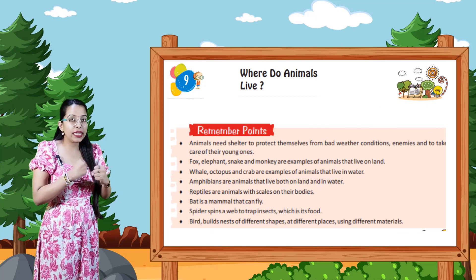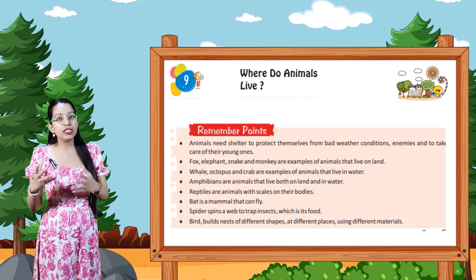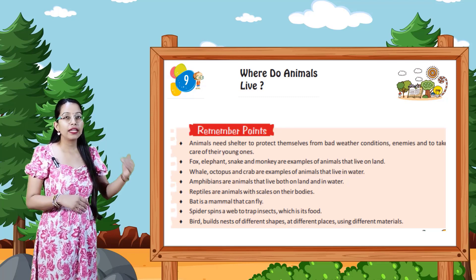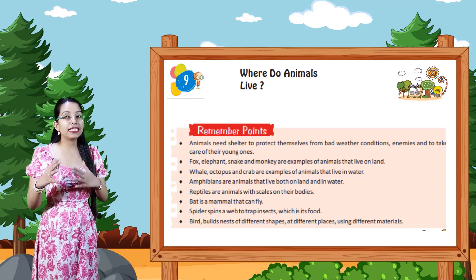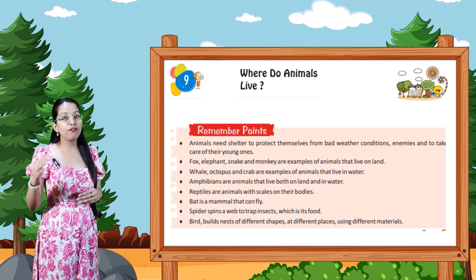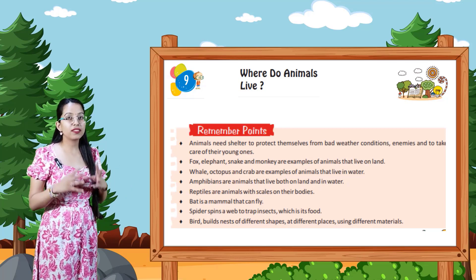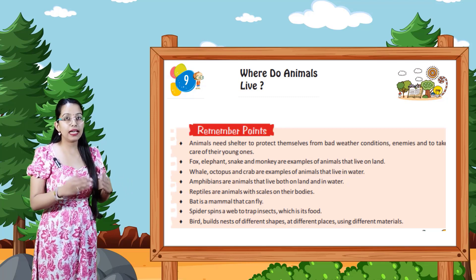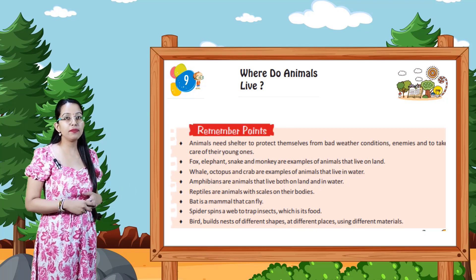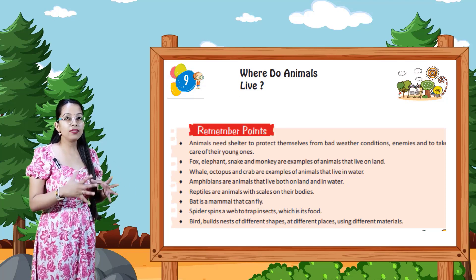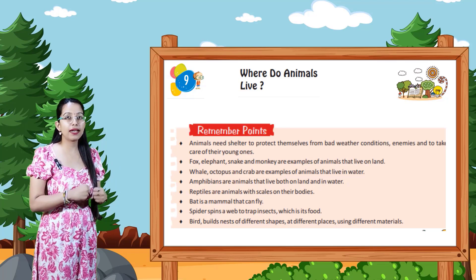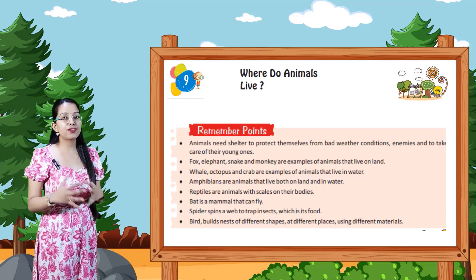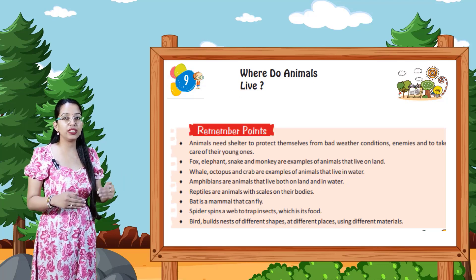Now let us conclude with the remember points. Animals need shelter to protect themselves from bad weather conditions, enemies, and to take care of their young ones. Fox, elephant, snake, and monkey are examples of land animals. Whale, octopus, and crab are examples of water animals. Amphibians live both on land and in water. Reptiles have scales on their bodies. Bats are mammals that can fly. Spiders spin webs to trap insects as food. Birds build nests of different shapes using different materials.